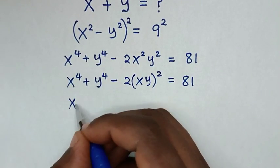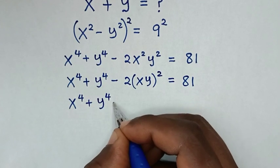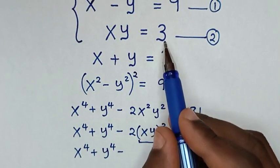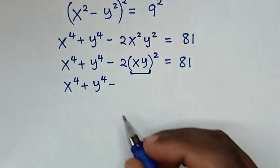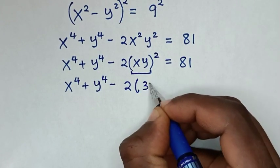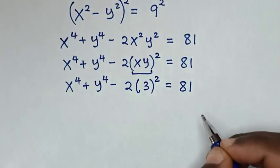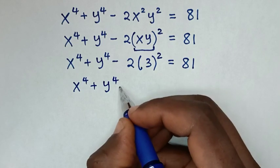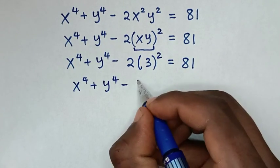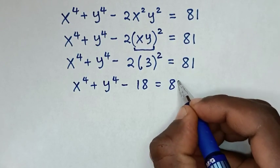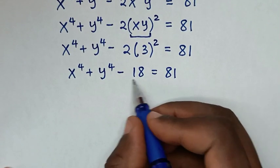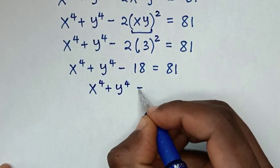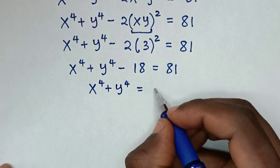Then it will be x to the power 4 plus y to the power 4 minus 2 times (xy) squared is equal to 81. Here, xy is from equation 2, which is 3. So we substitute 3, so it will be 2 times 3 squared is equal to 81. Then x to the power 4 plus y to the power 4 minus 18 is equal to 81.